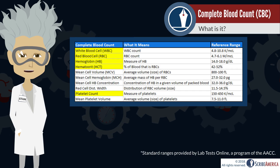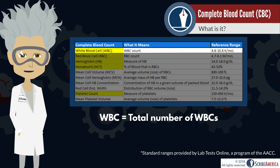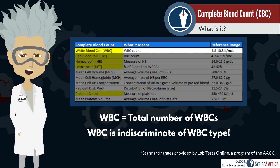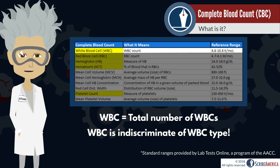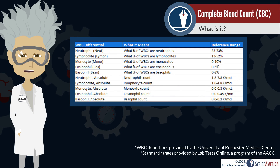Let's begin with white blood cell count, or WBC. It's the number of white blood cells you have. This count is indiscriminate of white blood cell type, and since being able to determine the count of each type of white blood cell provides additional information, a white blood cell differential is often included in CBCs. Let's take a look at one now and do a very general review of each type of white blood cell.